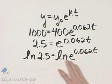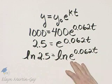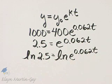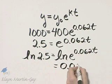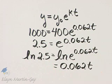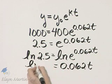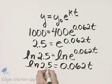On the right side, remember, natural log and E, they are inverses of each other. They undo each other, and the right side actually then simplifies to the exponent 0.062T. The left side is still natural log of 2 and 5 tenths.